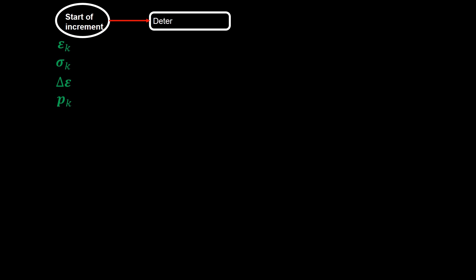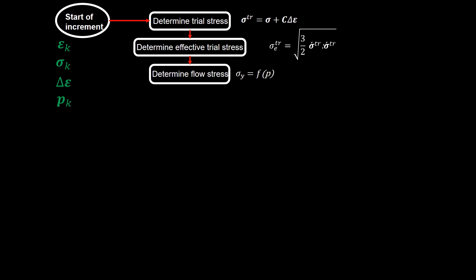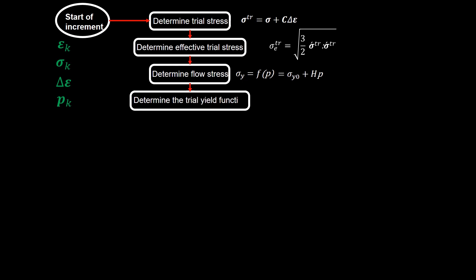After these manipulations, we are ready to introduce the algorithm to solve these equations for an increment. At the start of the increment, we know: strain, stress, strain increment, and effective plastic strain. In the first step, calculate the trial stress (elastic predictor) using the given formula, then calculate the effective trial stress. Next, calculate the flow stress based on the effective plastic strain — for linear hardening, the flow stress takes the corresponding linear form. Then calculate the yield function using the effective trial stress and flow stress.